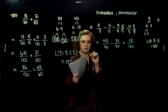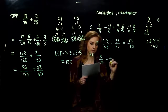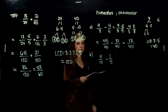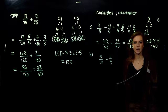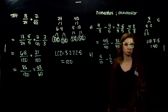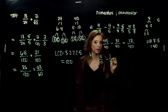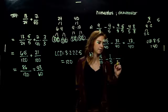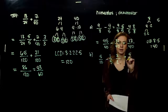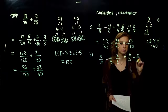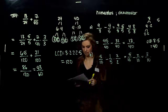Next example: 5 tenths minus 1 fifth. I like this example because we don't really have to write off in the margin to figure out the LCD. What is the least common denominator? 10, because 5 goes into 10. To turn 5 into 10, multiply by 2 over 2. So we're looking at 5 tenths minus 2 tenths — how many tenths are we left with? 3 tenths. And 3 is prime, so we can't break it down.